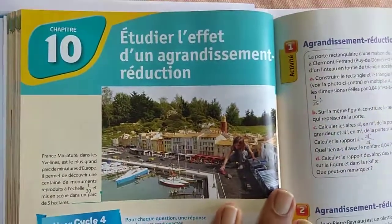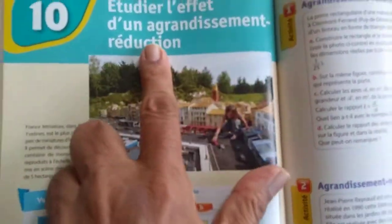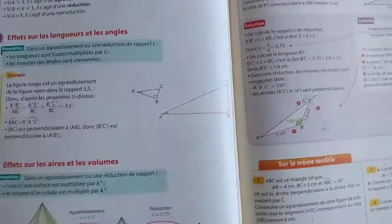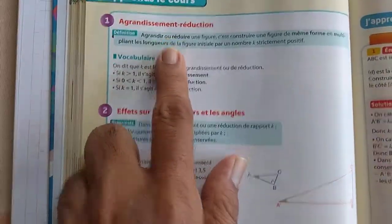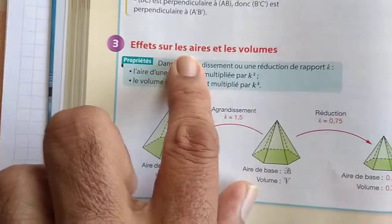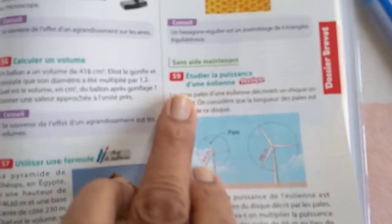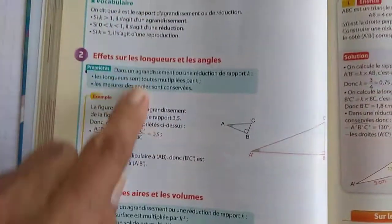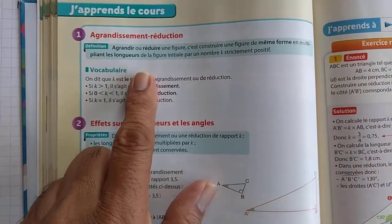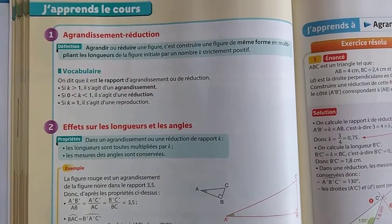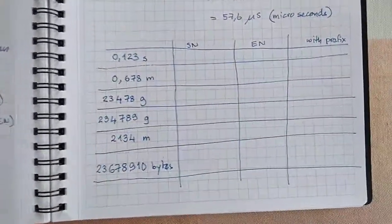The chapter is titled 'Agrandissement Réduction' — studying enlargement and reduction of figures. The topics are: agrandissement réduction, effets sur les longueurs et les angles, effets sur les aires et les volumes. There are only 59 problems in this chapter, so it will go fairly quickly, though I will teach a little more than is in the book — including something called homothétie. Please submit the filled-in table before this evening; it should take about five minutes at most.